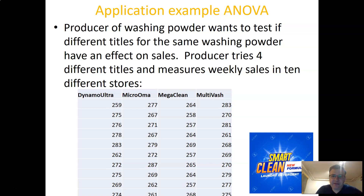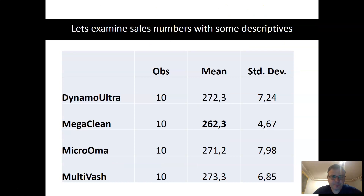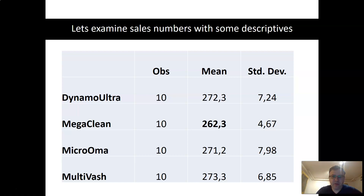Looking at the descriptive statistics of the sales samples — mainly the mean values — we see that all four titles sell more or less the same number of boxes, but Mega Clean stands out as selling slightly less than the other titles. The question is: is this average of 262.3 boxes actually lower than the averages for the other washing powder titles?